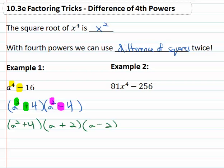Just because it doesn't factor anymore doesn't mean it disappears, it just stays like it is. And so we end up with a final answer of a squared plus four times a plus two times a minus two.